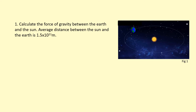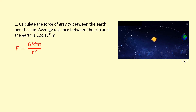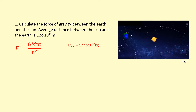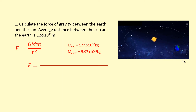In this example I want to calculate the force of gravity between the Earth and the Sun. The average distance between the Sun and the Earth is 1.5 × 10¹¹ meters. I can use Newton's law of gravitation here. I need the mass of the Earth and the mass of the Sun, which you can normally find in your data sheet or is given to you.